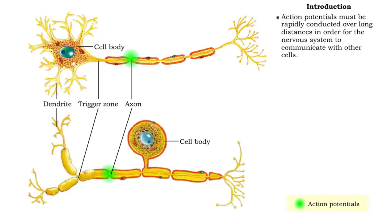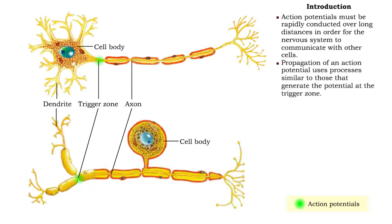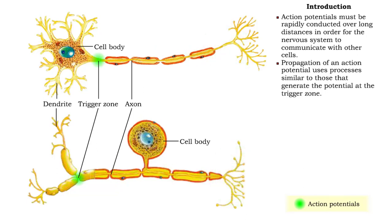In order for the nervous system to communicate with other cells, action potentials must be rapidly conducted over long distances. The processes that allow the conduction, or propagation, of an action potential along the entire membrane of an axon are not very different from those that generate one at the trigger zone.